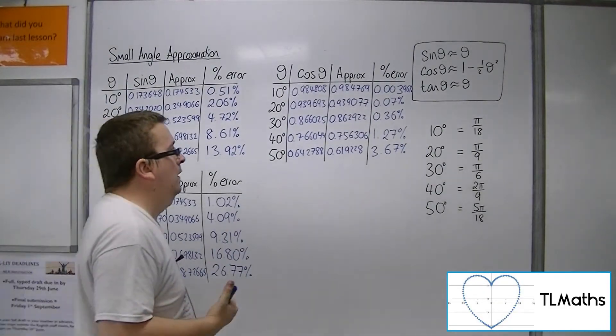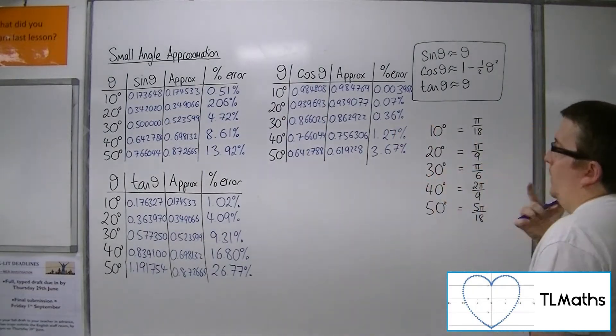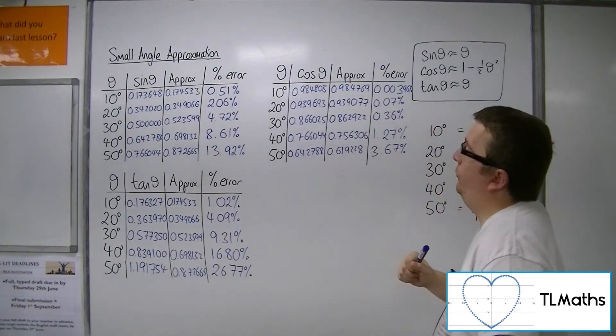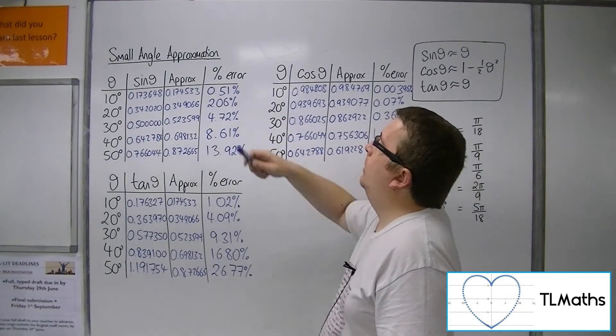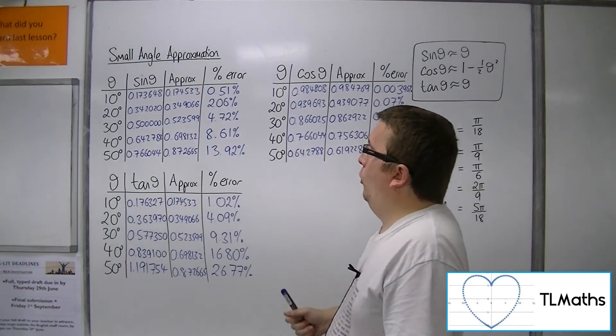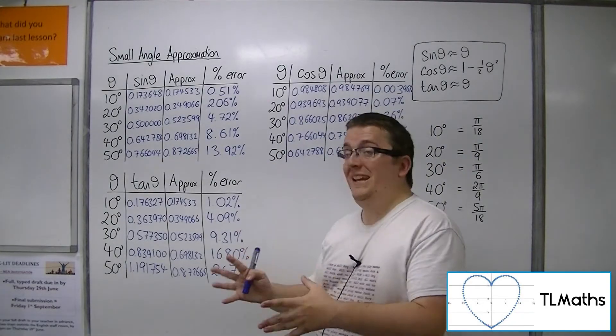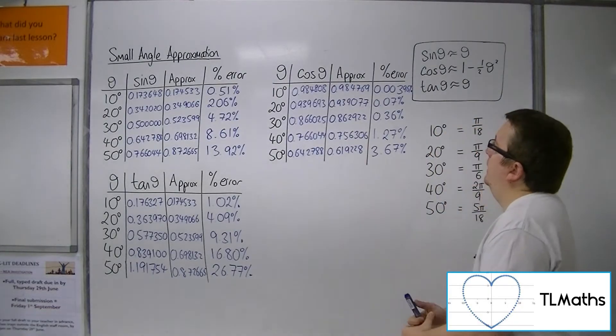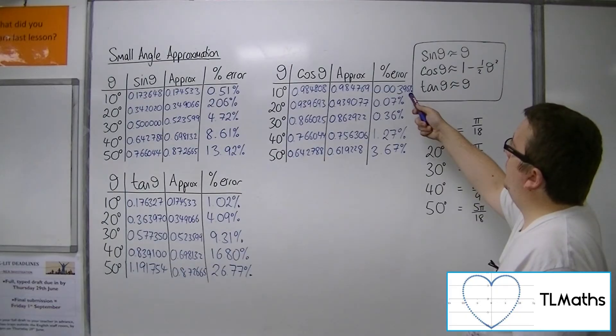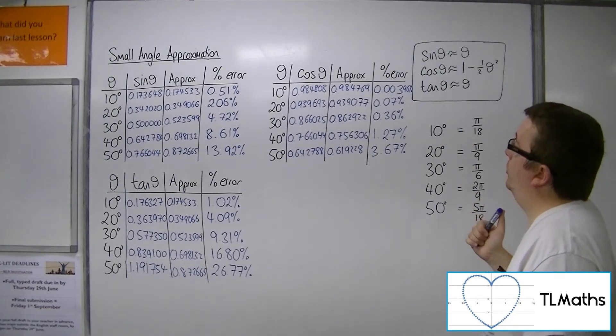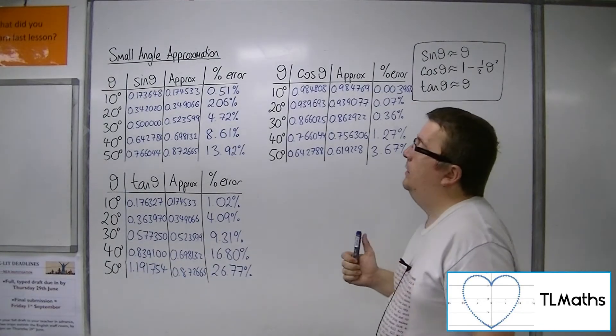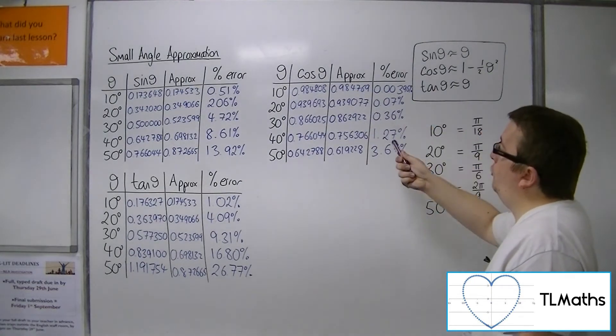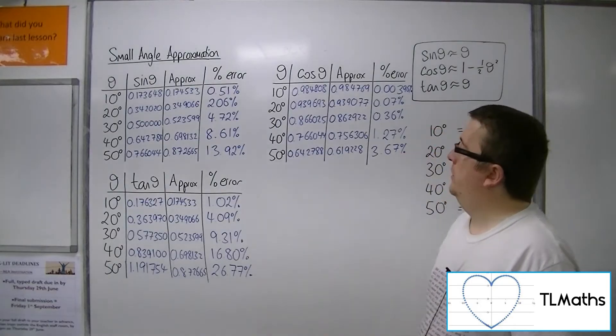Let's have a look at what we've got here. We have the percentage errors for sine going from 0.5% when we're at 10 degrees up to almost 14% when we're at 50 degrees. Now, for cosine, we've got a very small percentage error of 0.00396% when we're at 10 degrees. So, for small angles, as you can see, it performs a lot better than sine.